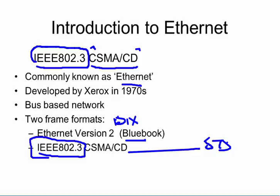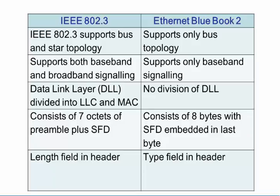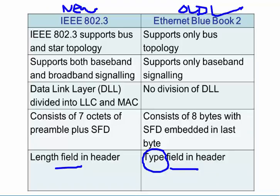The strange thing is that most people are still using the old version. When you run Wireshark, most packets you find on your network are still Ethernet 2, version 2, or Blue Book — as opposed to IEEE 802.3. There are subtle academic differences; for example, there's a length field in one and a type field in the other. You can actually see that issue when you look at packets in Wireshark. Read it in your spare time — it's not critically important.